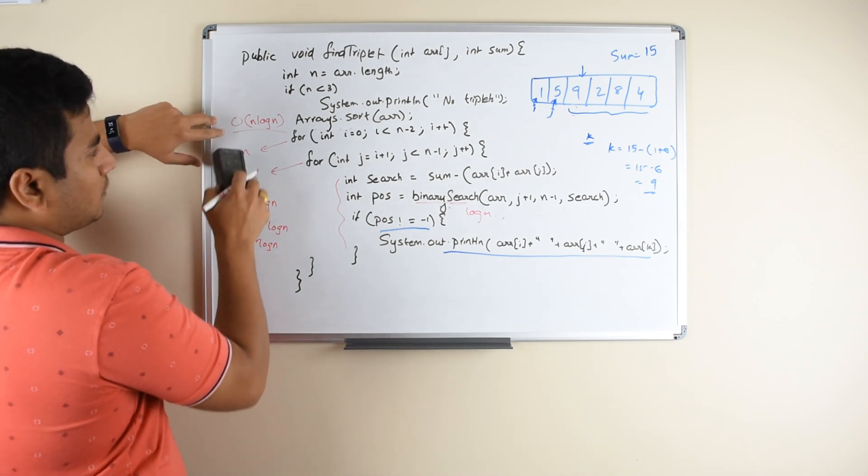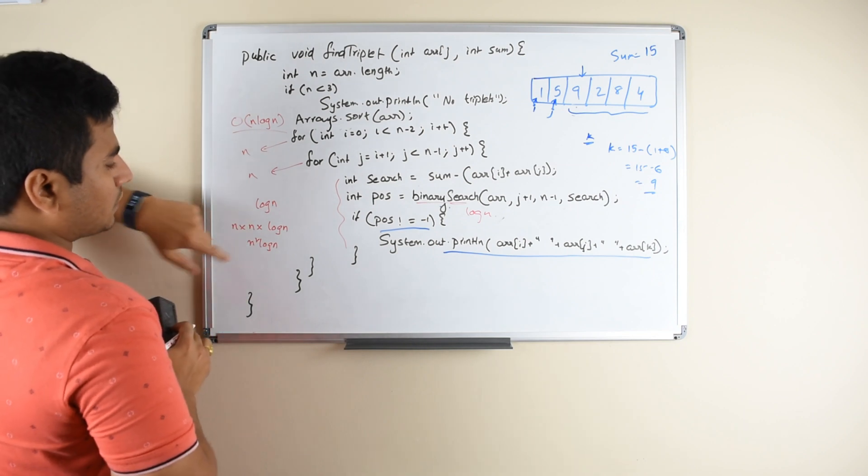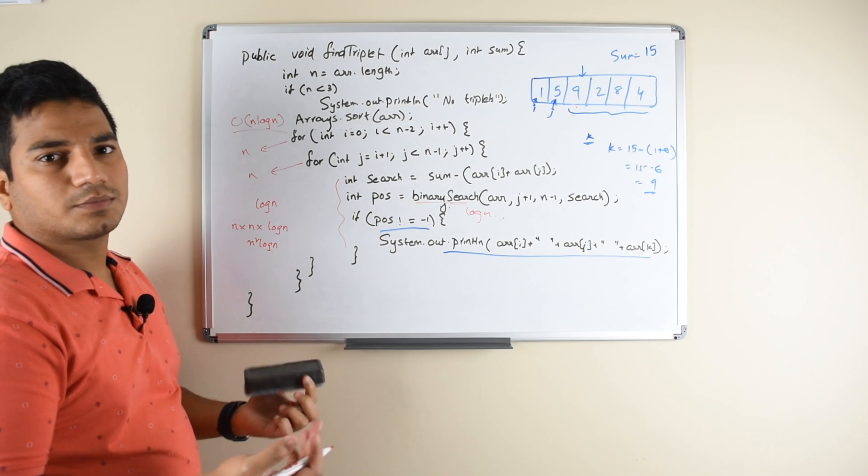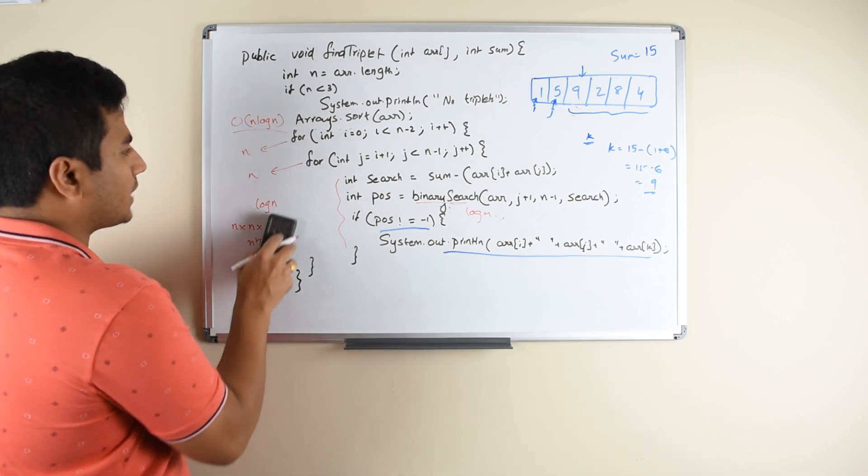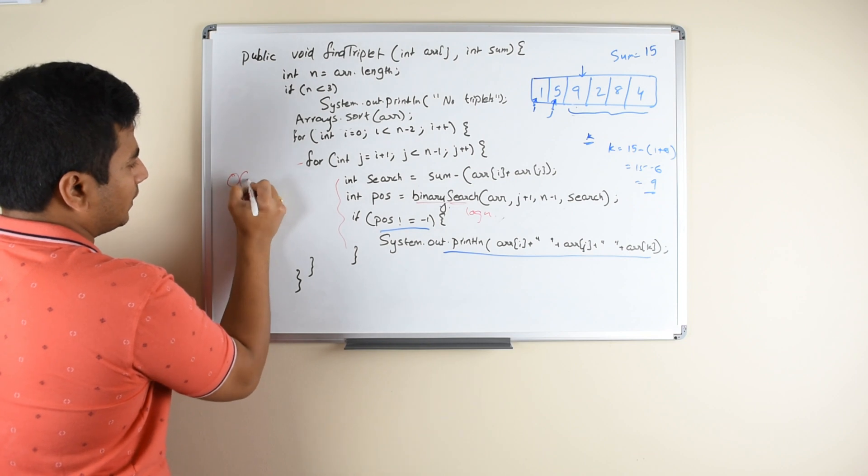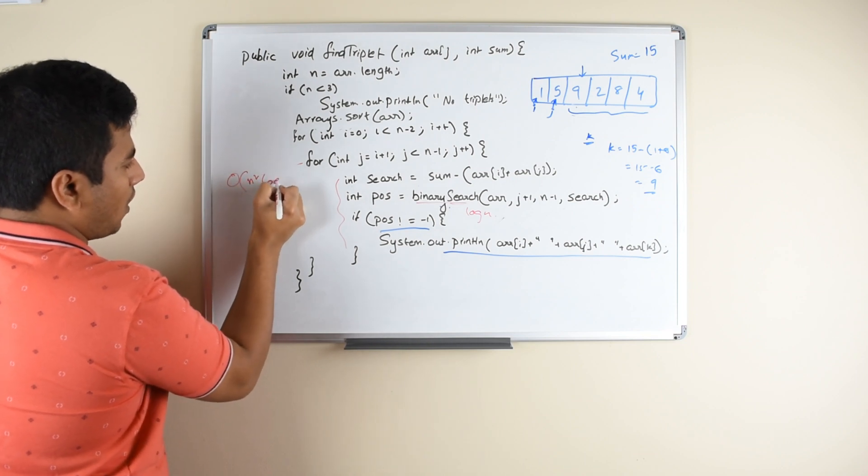And you may say that the total time complexity is n log n plus n square log n. But we know that we take only the dominant terms in terms of the time complexity. So the total time complexity of this approach is going to be O of n square log n.